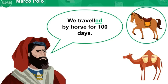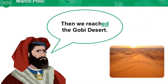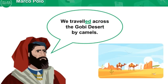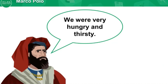Good job — picture one is correct. Then we reached the Gobi Desert. We traveled across the Gobi Desert by camels. We were very hungry and thirsty.